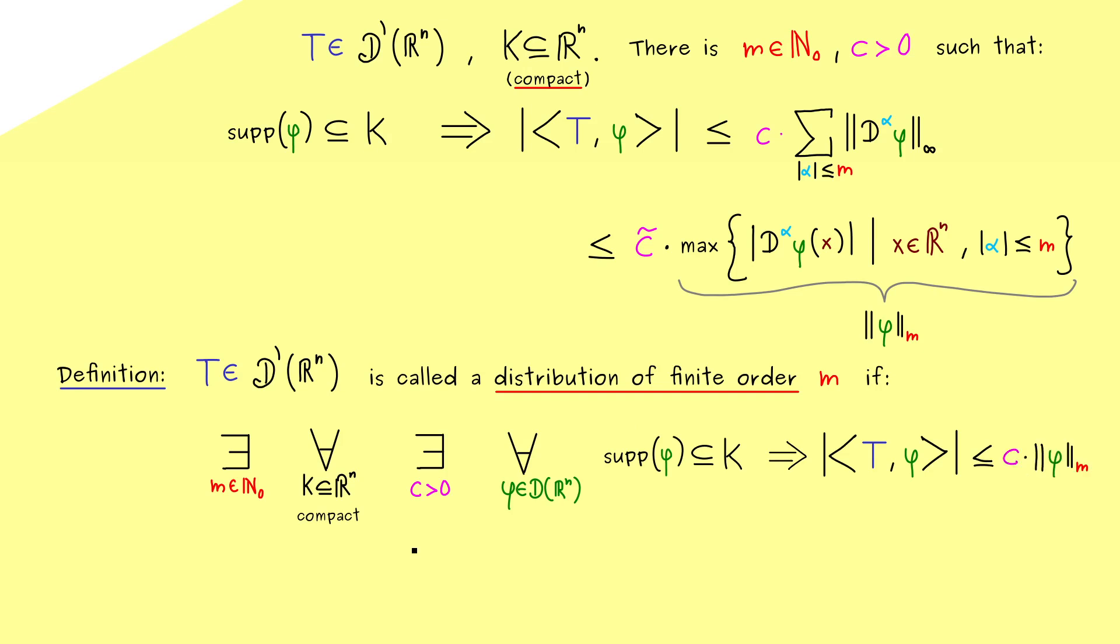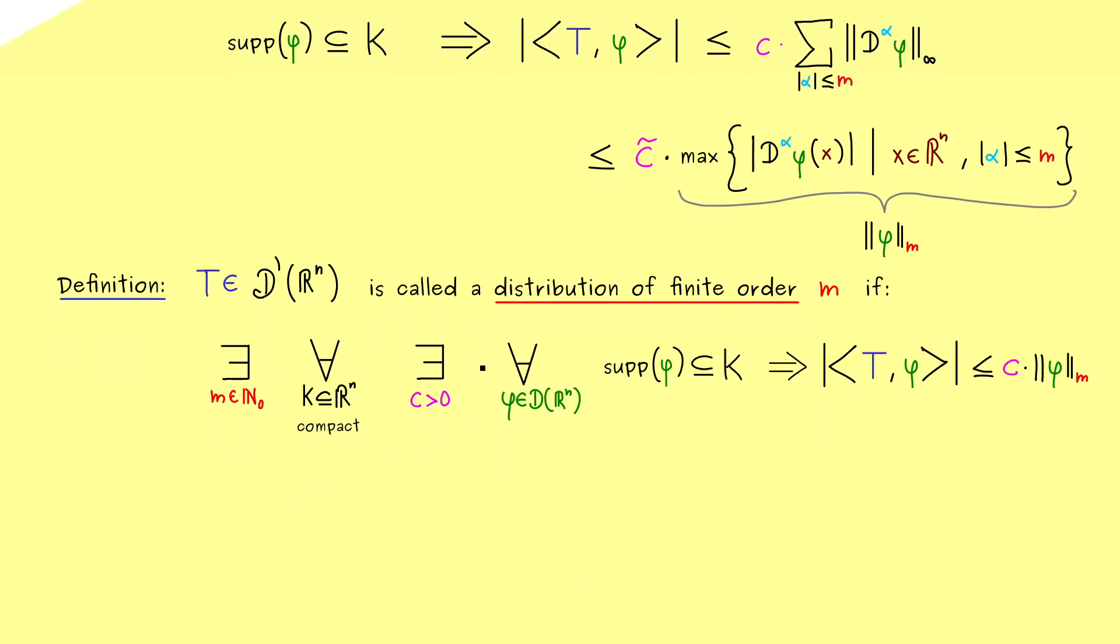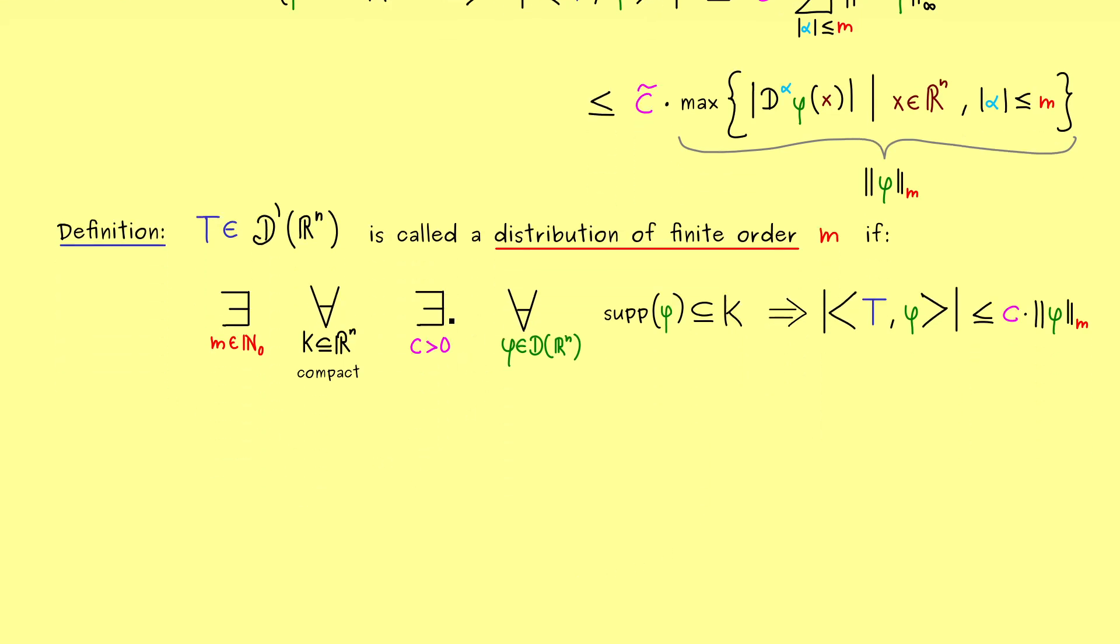So this is the definition, and you should immediately see, this is definitely stronger than the claim from above, because m should work for all compact sets at once. And exactly this property brings us to a special kind of distributions, we call the finite order distributions.